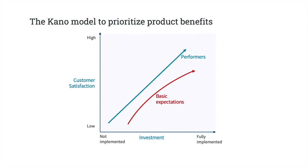For example, in the restaurant business, the quality of the food is a typical performer. The better the quality of the food, the more tasty and enjoyable it is, and the more satisfied the customer is at the end of their meal. In the airline industry, comfort and price are performance. The more comfortable the plane, or the lower the price of the flight, the more satisfied the customer will be.